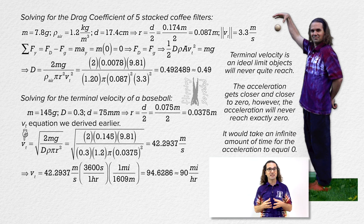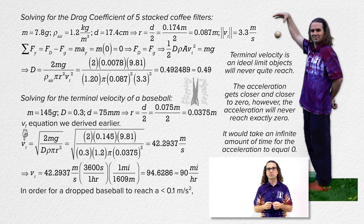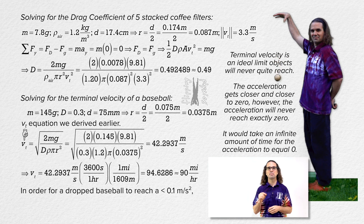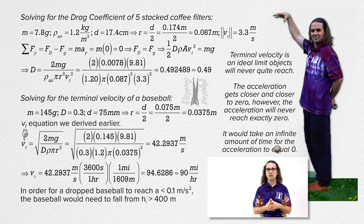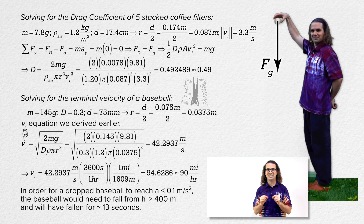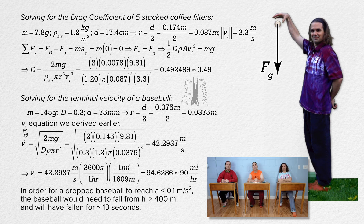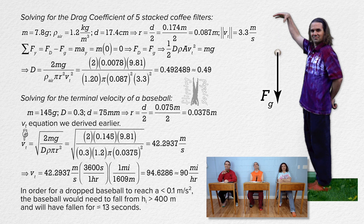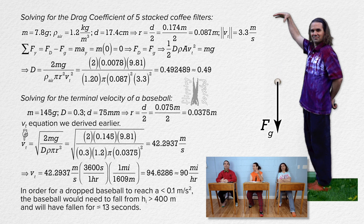In order for a dropped baseball to get very close to its terminal velocity — specifically to have an acceleration less than 0.1 meters per second squared — the baseball will have to have been dropped from a height of more than 400 meters and will have fallen for almost 13 seconds. That means you would have to drop a baseball from about a quarter mile off the ground for it to get close to its terminal velocity of 90 miles per hour.